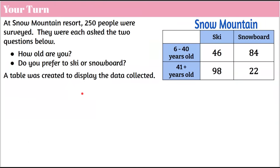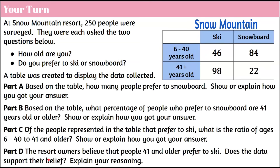Now I'd like you to practice using a bivariate data table. At the Snow Mountain Resort, 250 people were surveyed and asked two questions: How old are you? And do you prefer to ski or snowboard? A table was created to display the data collected, with two age groups and ski or snowboard as the categories. Here's your four-part question. Part A: Based on the table, how many people prefer to snowboard? Show and explain how you got your answer. Go ahead and pause the video, answer the parts, and come back when ready.